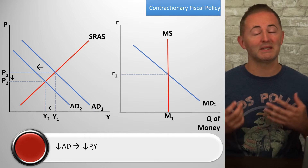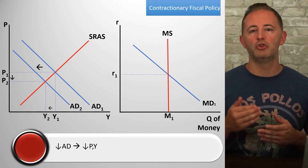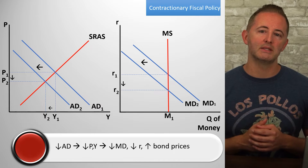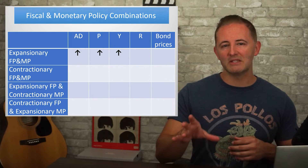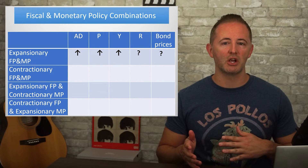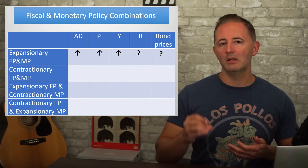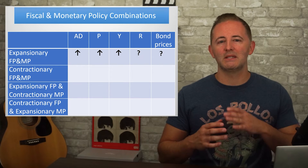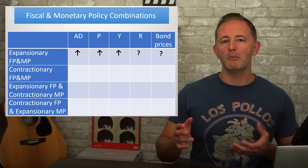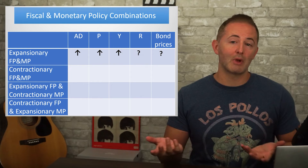If we look at contractionary fiscal policy, same idea. AD shifts left, lowering the price level and real output. This in turn reduces the demand for money, leading to a lower nominal interest rate and raising bond prices. Notice what this means for our policy combinations. Assume that both fiscal and monetary policy are expansionary. As expected, AD, P, and Y all increase. But notice that it's unclear what will happen to interest rates. Monetary policy is pushing rates down while fiscal policy is pushing them back up. So this combo might be useful if the goal is to definitely increase output, but leave interest rates relatively unchanged.